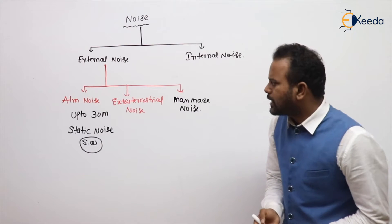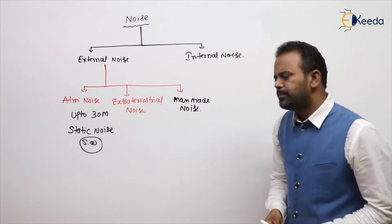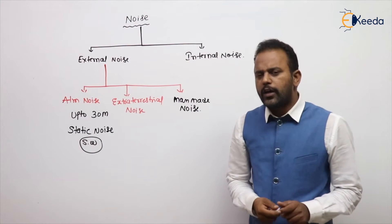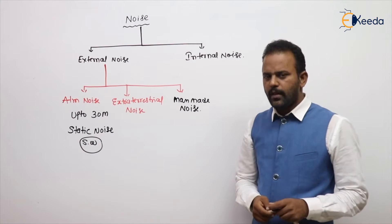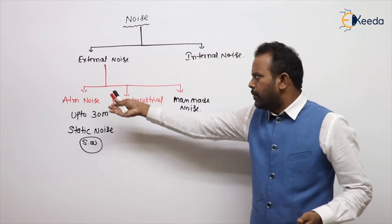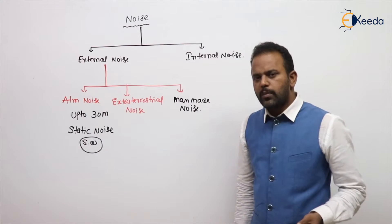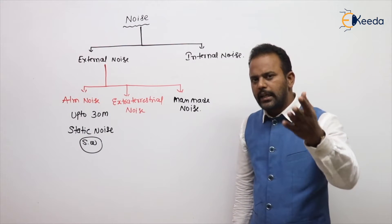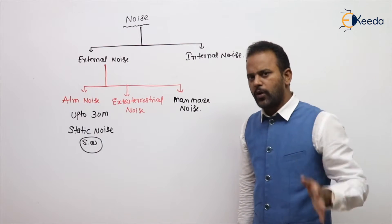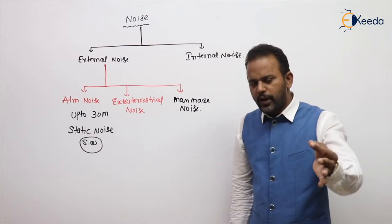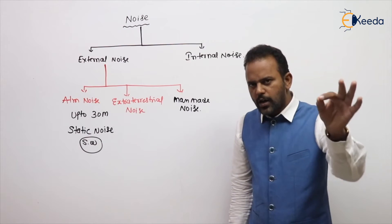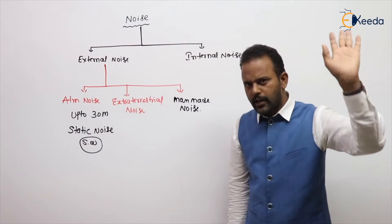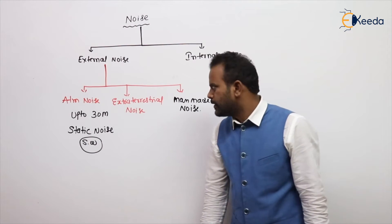Above 30 megahertz, the effect of atmospheric noise will be less. Main sources for atmospheric noise are lightning, thunderbolts, and meteors. Its effect is up to 30 megahertz, and it is also called static noise.